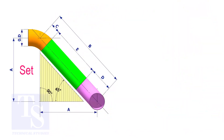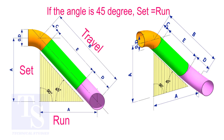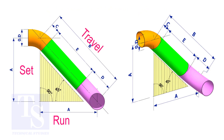In an offset, if the included angle is 45 degrees, the set and the run shall be the same. If the value of the set and the run are equal, the value of the travel is the set or the run multiplied by 1.414.